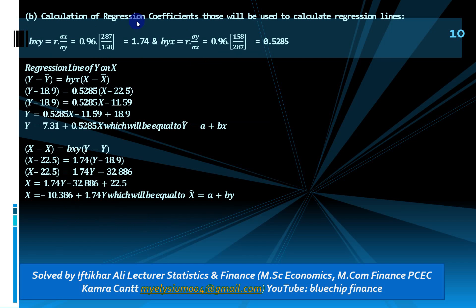Now we move to part (b): calculating the regression equations. We need two regression coefficients — β(x on y) and β(y on x). β(x on y) equals the correlation coefficient multiplied by standard deviation of x divided by standard deviation of y. β(y on x) equals the correlation coefficient multiplied by standard deviation of y divided by standard deviation of x.